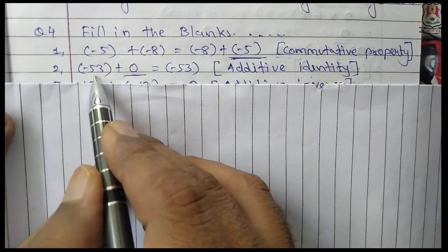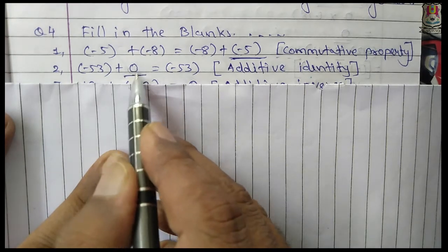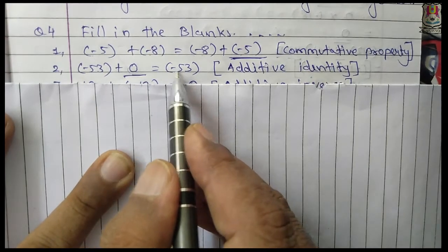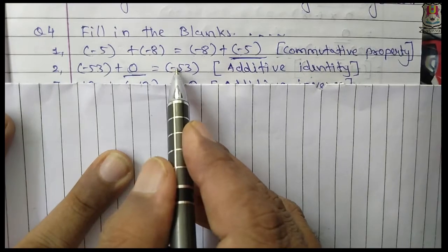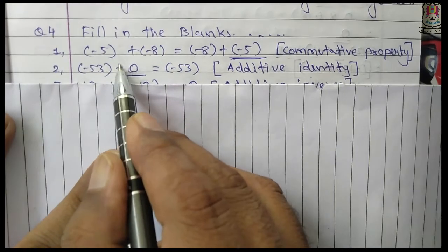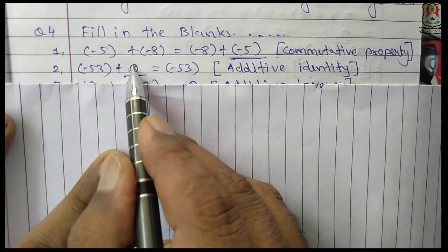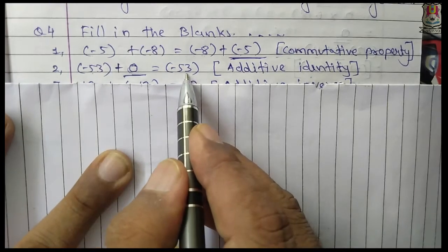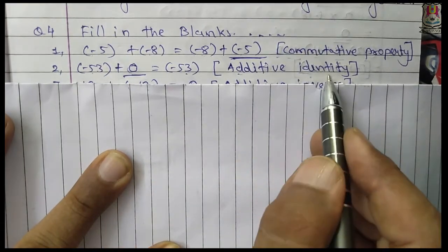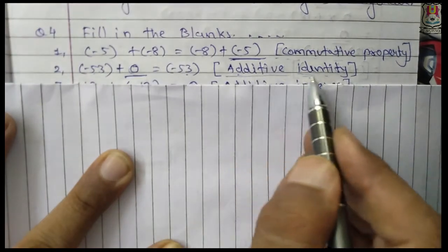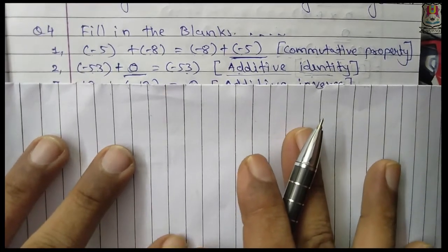Number 2: minus 53 plus blank equals minus 53. Any number added by 0 remains the same, so the blank is 0. The property used here is additive identity.